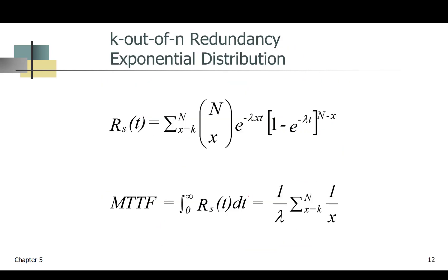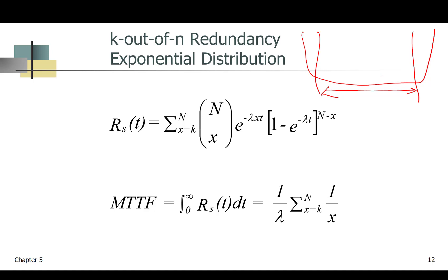We can extend this to the exponential distribution. From the bathtub curve, in the useful life range, the probability of success or reliability is constant. When reliability is constant, we can use the exponential distribution.